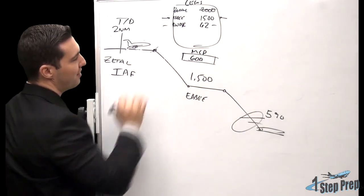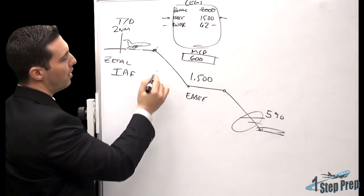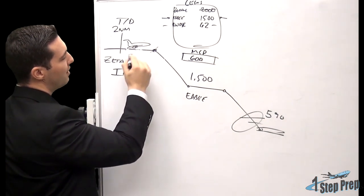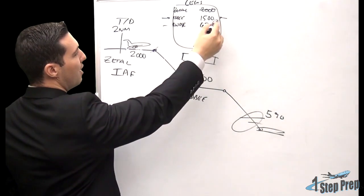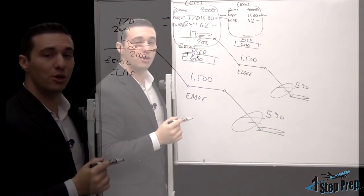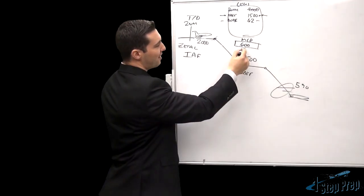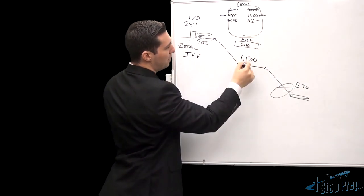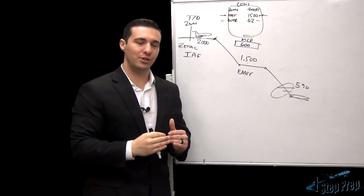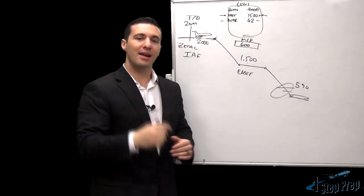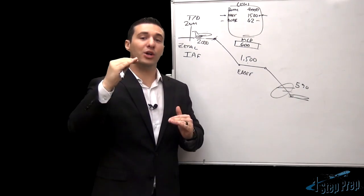So the MCP will now reflect 600. The aircraft will then determine, well, my current altitude is 2,000, this is what my altimeter reads. The legs page shows that I should now descend to 1,500 feet. The MCP says 600 feet, both 1,500 and 600 are lower than my actual altitude. So, I will descend and I will comply with the higher of the two.